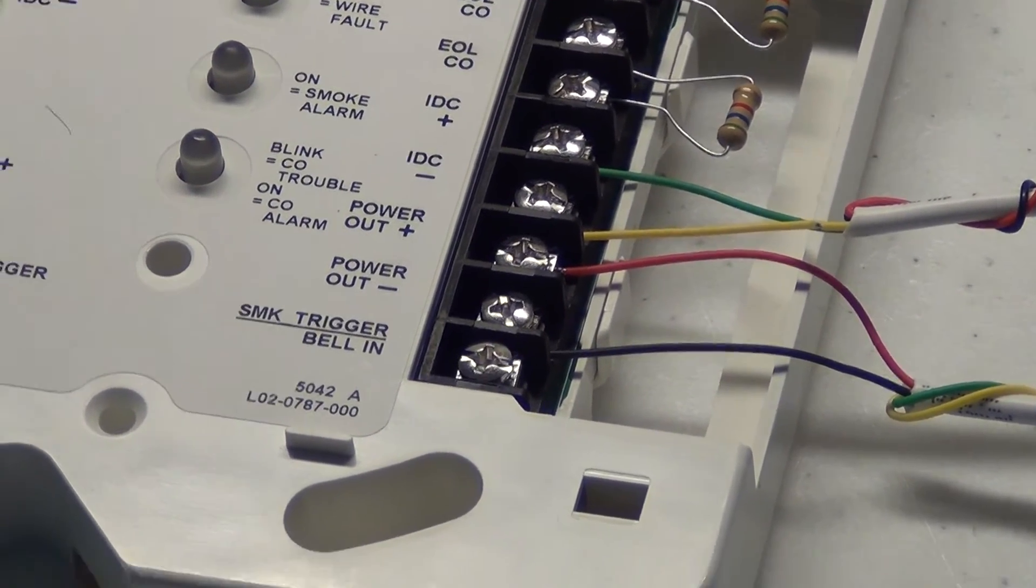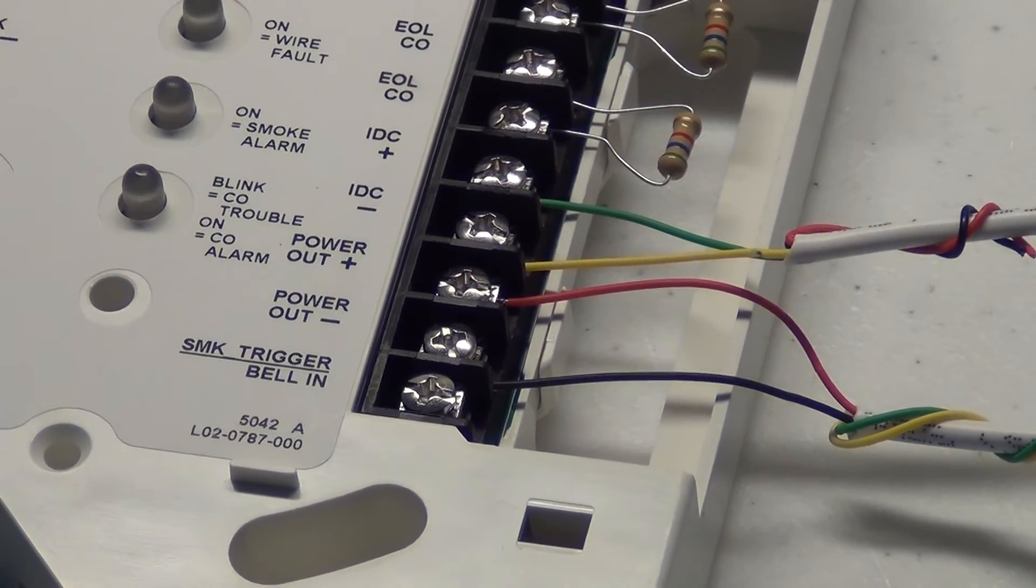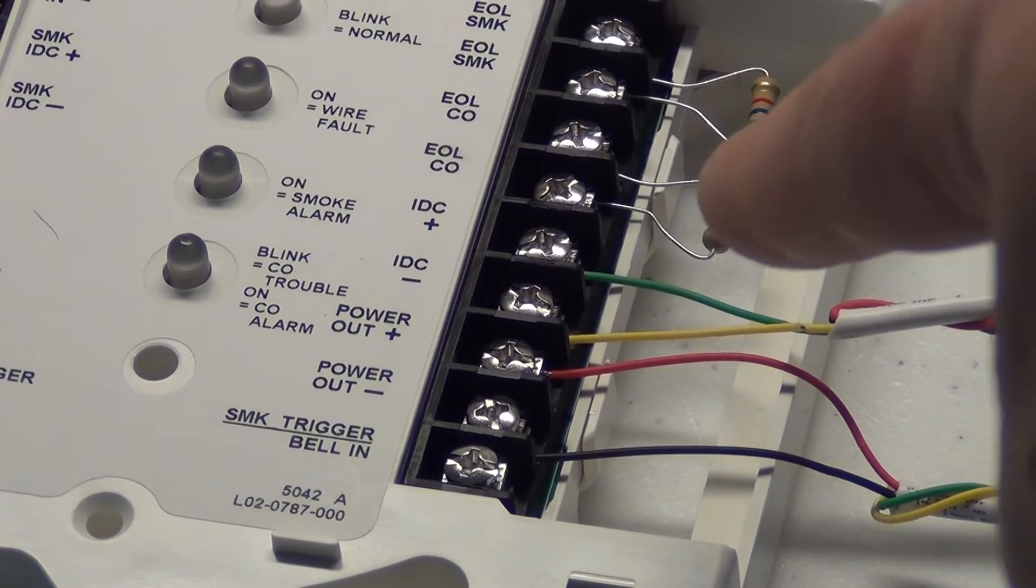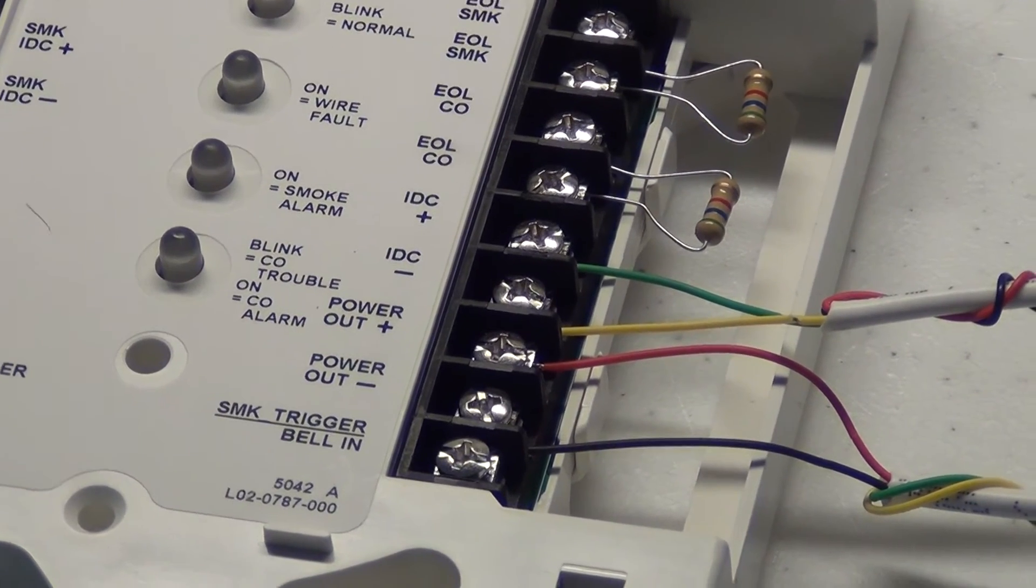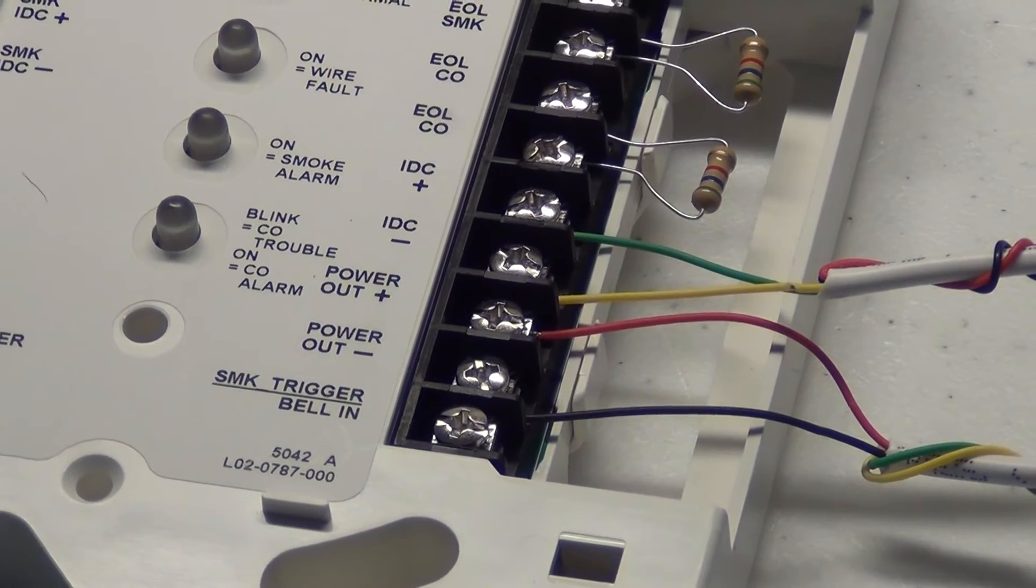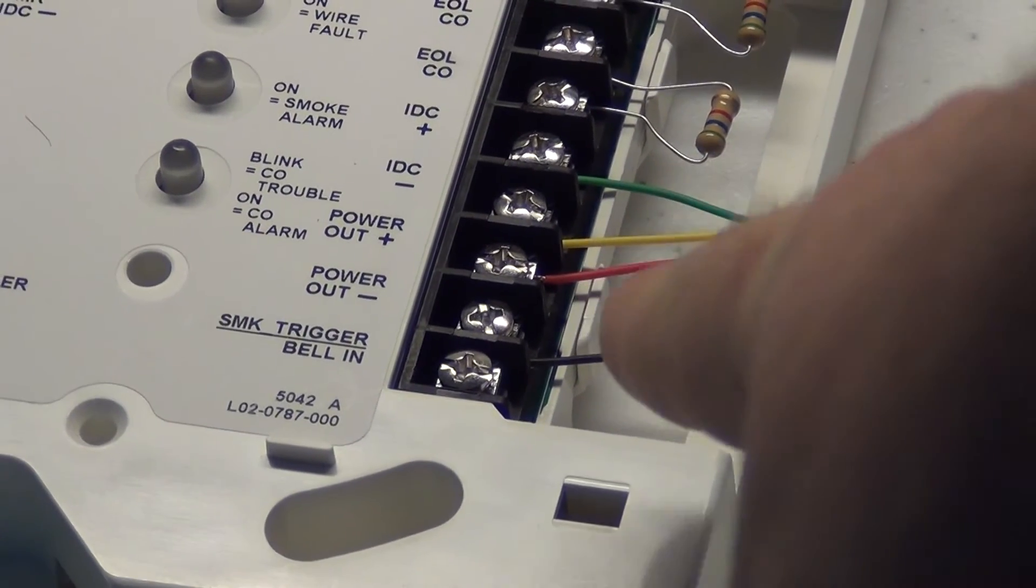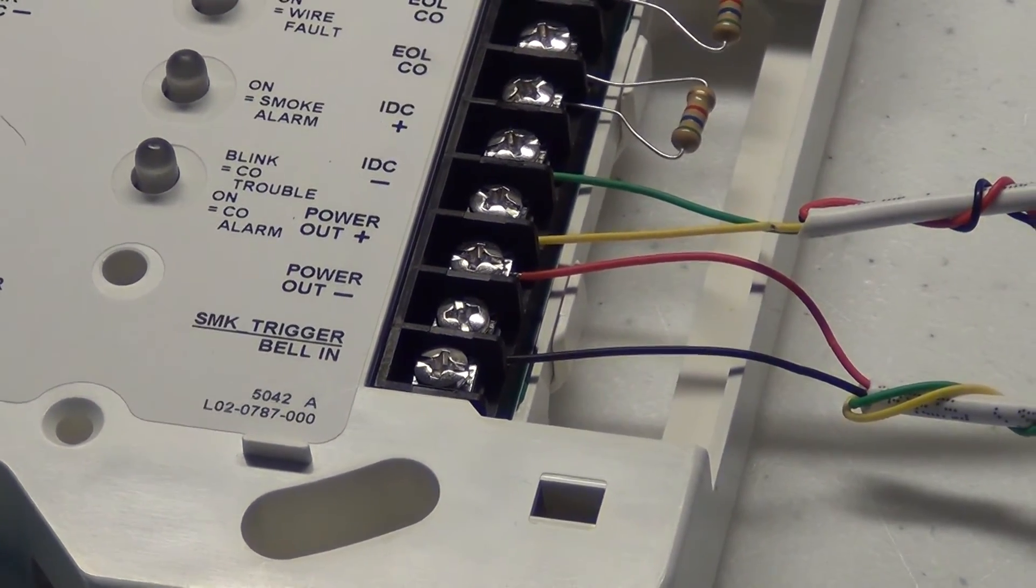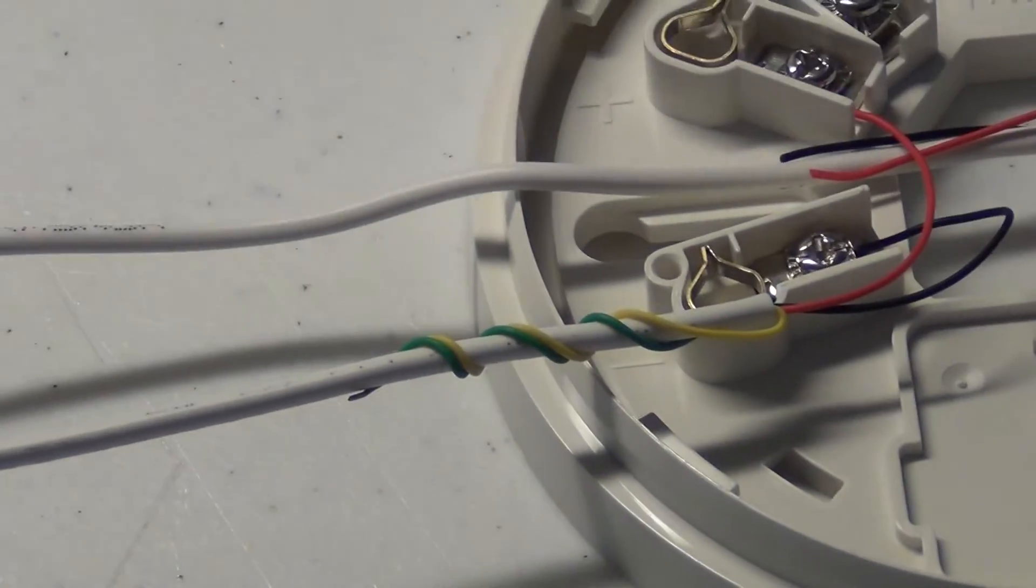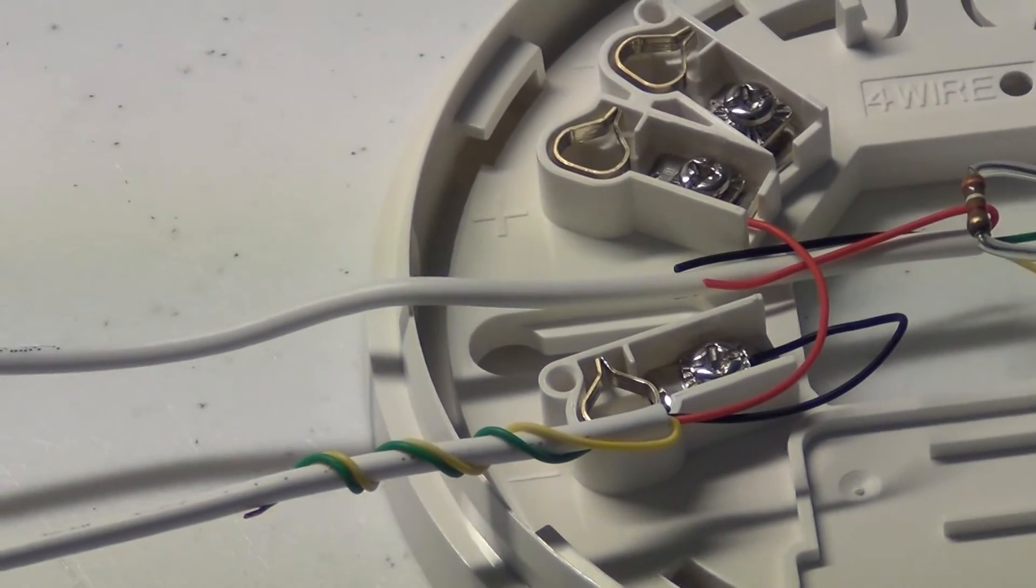And what we have here, you see where the green and yellow are attached, those are going to be your normally closed and common for your carbon monoxide detector. And then your black and red are going to be for your power for your smokes and data wires for those as well.